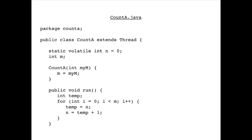The next line is static volatile int n, initialized to zero. Static means one per class instead of one per object — same meaning in Java as in C++. That is an attribute of this class. Then int m is also an attribute of the class. The constructor CountA has the same name as the class. The formal parameter myM is passed to the constructor, and the constructor sets the attribute little m to the value of myM passed as a parameter.